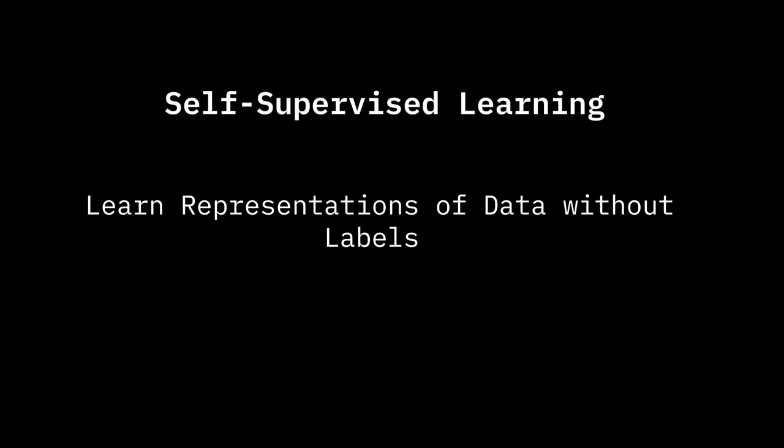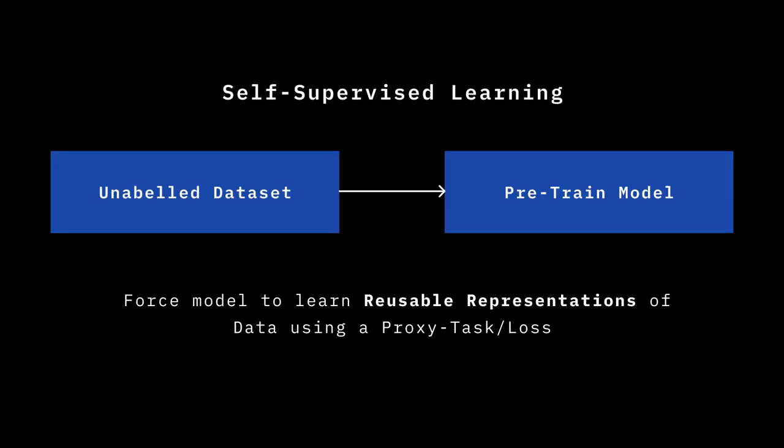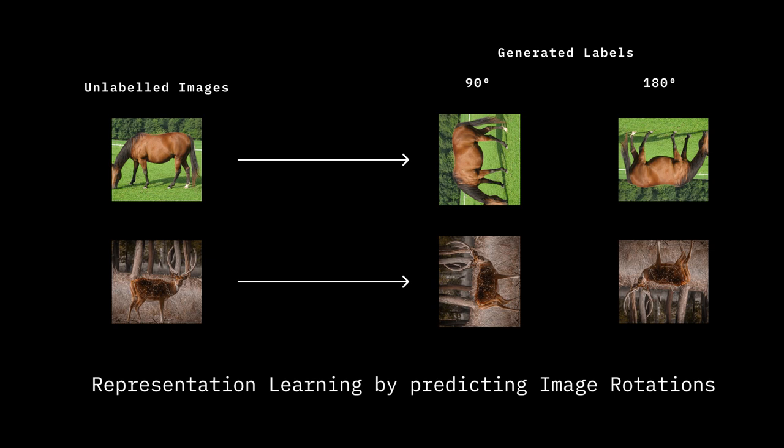So how does self-supervised learning work? We take unlabeled data and force the neural network to learn what we mainly care about: the features or representations of the data. As an example of how it's done in practice, in one technique we take unlabeled images and rotate them by multiple different angles — say 90 degrees or 180 degrees — and then train the network to predict how much the image is rotated. In order to do this, the network has to learn good representations.